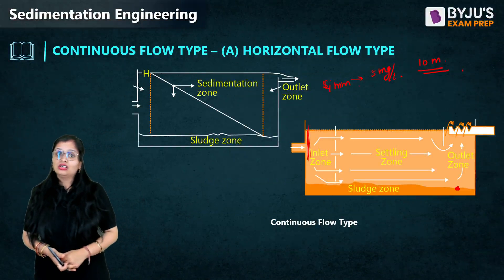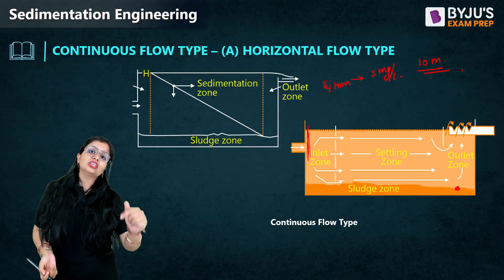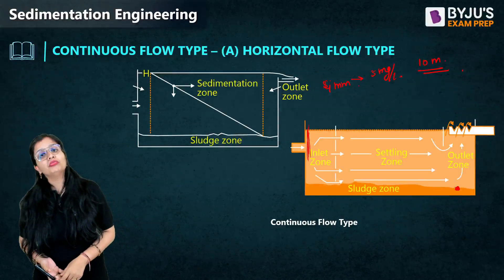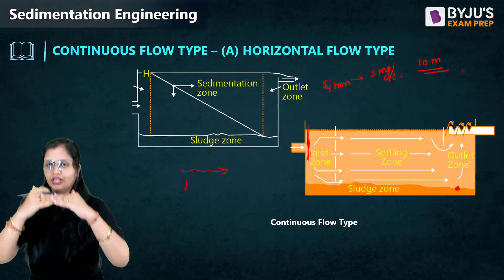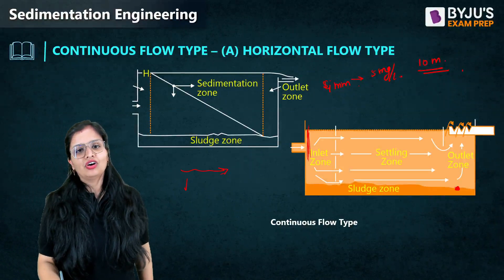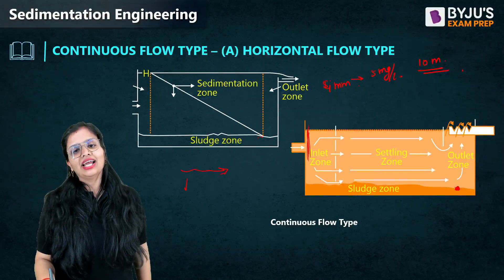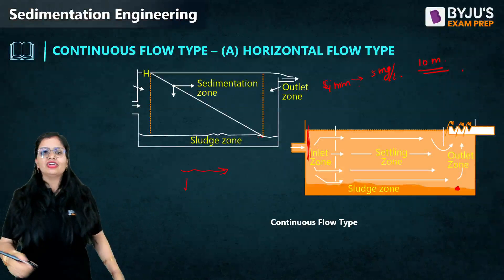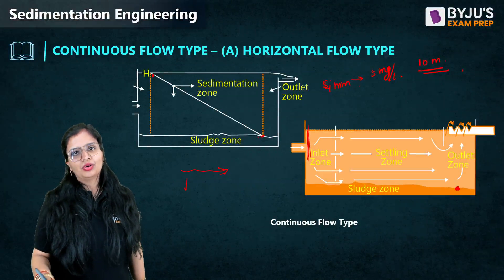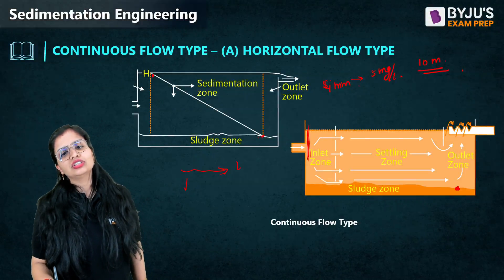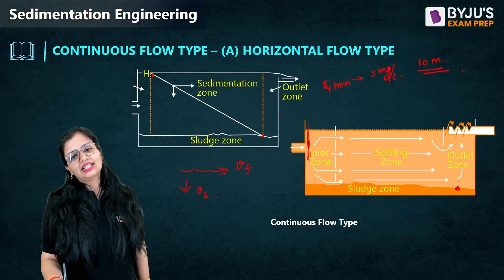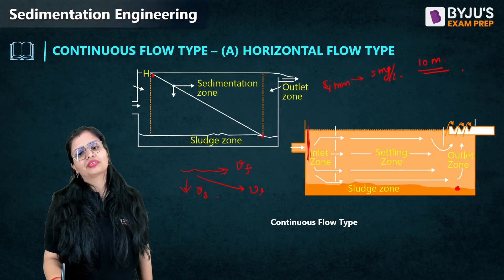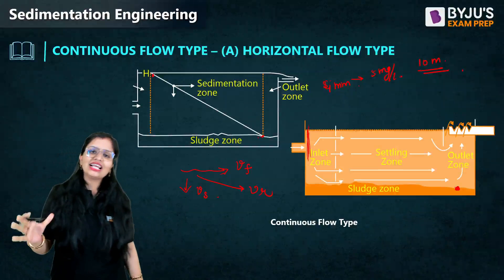The turbulence is not zero, so how is the particle removed? When the particle is traveling forward with the flow, it is also traveling downward due to gravity. So along with the flow velocity in the forward direction, it has a settling velocity in the vertically downward direction — giving a resultant diagonal path. By the time it travels the length of the tank, the particle settles to the bottom.